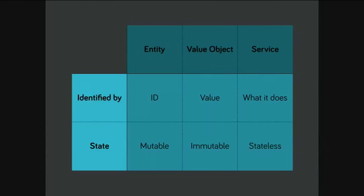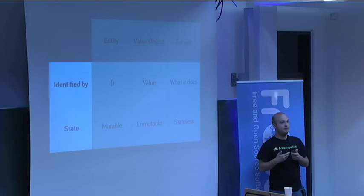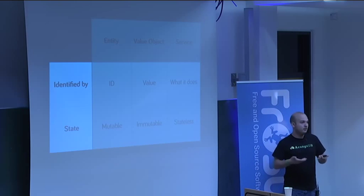Let's talk about the domain side. In Eric Evans' book, he describes six main components in the domain world. The first three are entity, value object, and service. An entity is something identified by an ID — it has its own identity. For example, a person is an entity: if we change someone's last name after marriage, the person is still the same person, so we can't rely on their data fields alone to identify them.